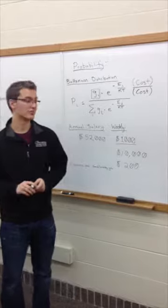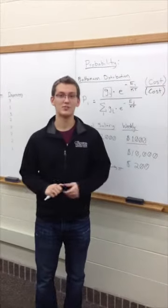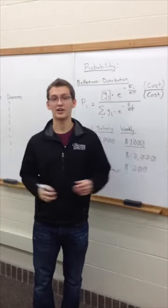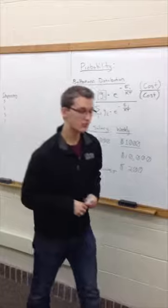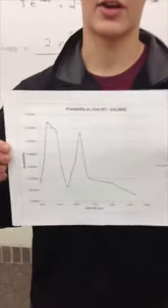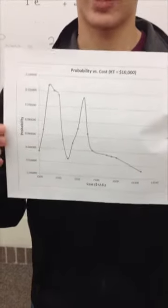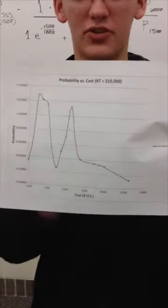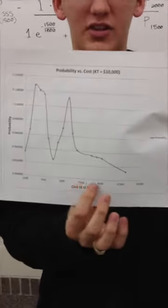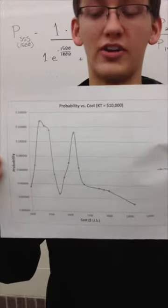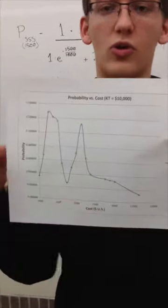What if instead of $1,000 we used $10,000 as our kT? With significantly more money available, you'd expect to explore higher cost necklaces more easily. The graph for kT = $10,000 actually has two humps due to degeneracy — some higher states have higher degeneracy, raising their probability. This graph is much more spread out, with considerable probability even in the $9,000 to $12,000 range, showing that with more energy the system can explore more microstates.